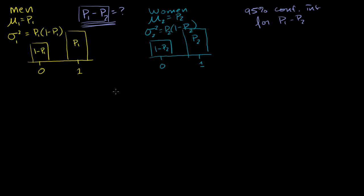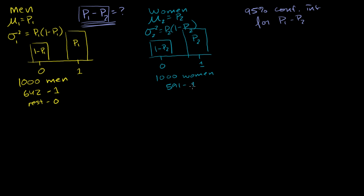The way we do that: we go out and we find 1,000 men likely to vote and 1,000 women likely to vote. When we survey the 1,000 men, let's say 642 say that they will vote for the candidate — those are 1's — and the rest are 0's. And we do the same thing with women. We survey 1,000 women who are likely to vote, and let's say 591 say that they will vote for the candidate, and the rest say they will not. So based on our sample proportions, it looks like there is a difference, but we still have to come up with our confidence interval.